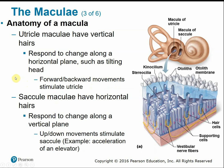Looking at the structure of the maculae: the utricle maculae have vertical hair cells that respond to changes in movement along a horizontal plane. The saccule has horizontal hair cells that respond to vertical movement, such as moving up and down.